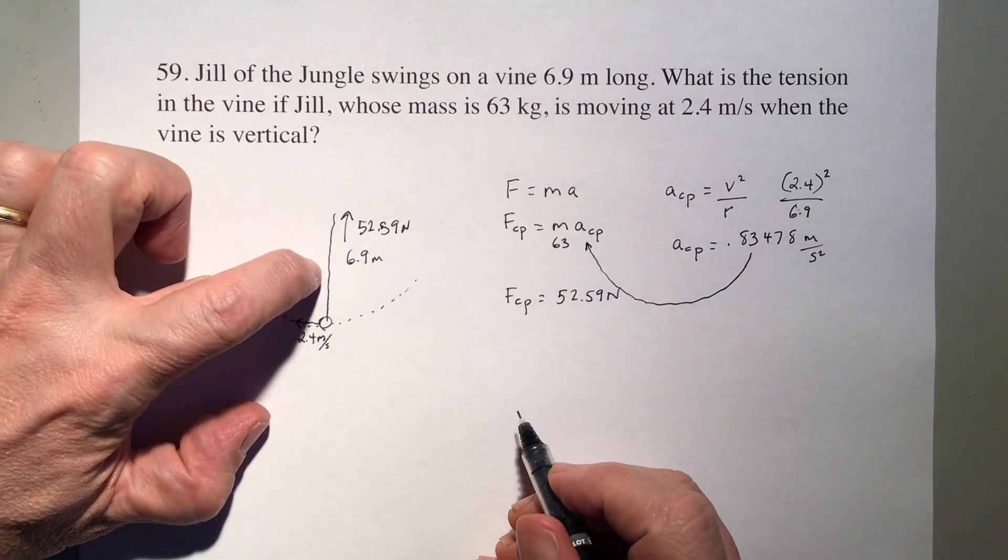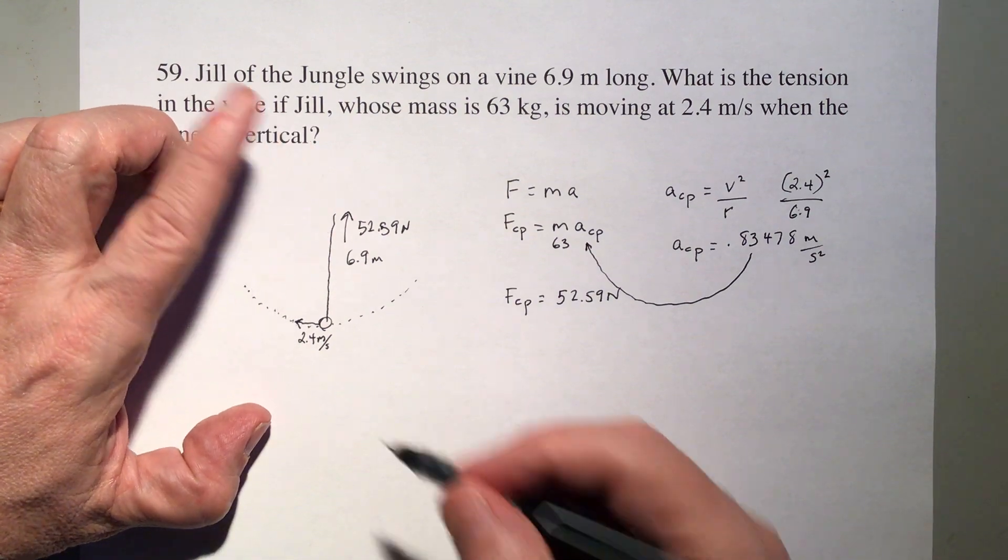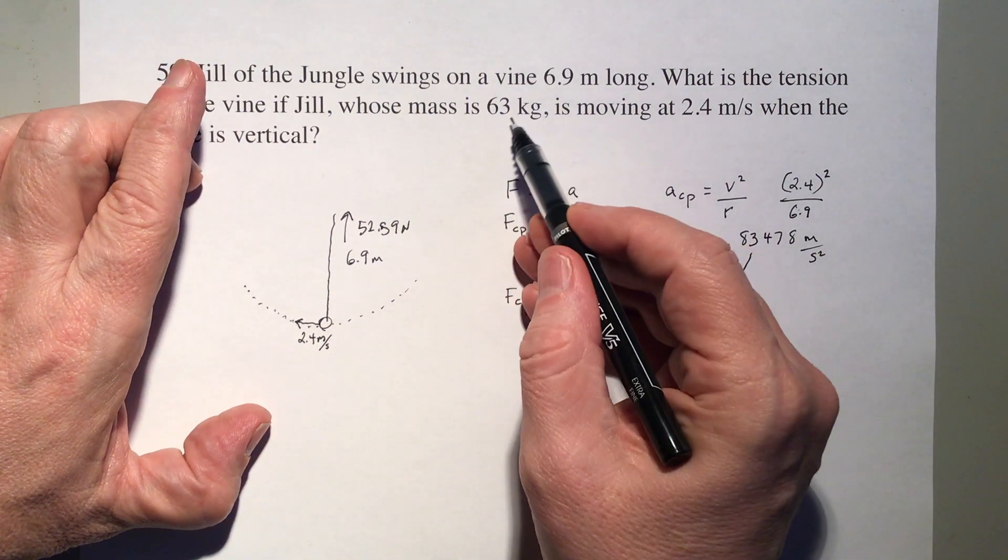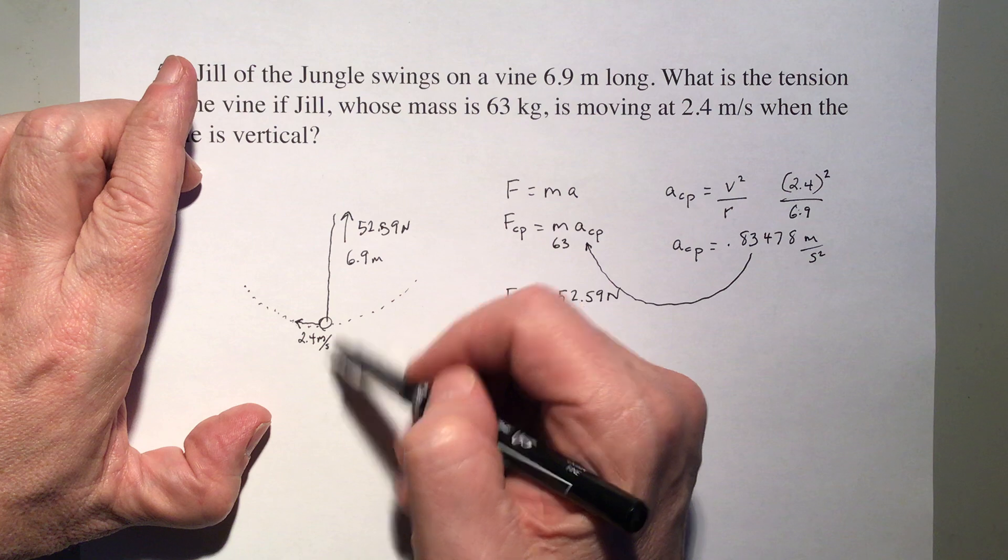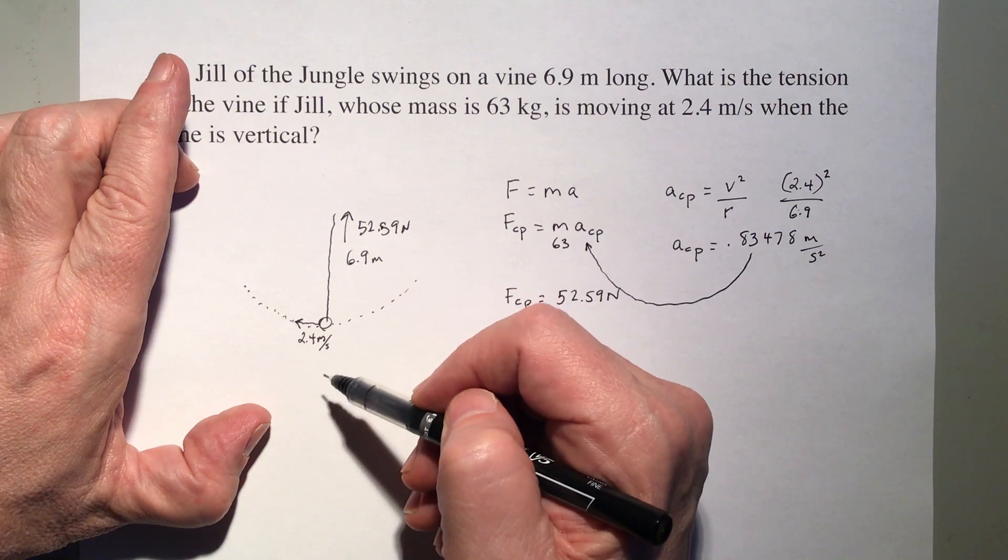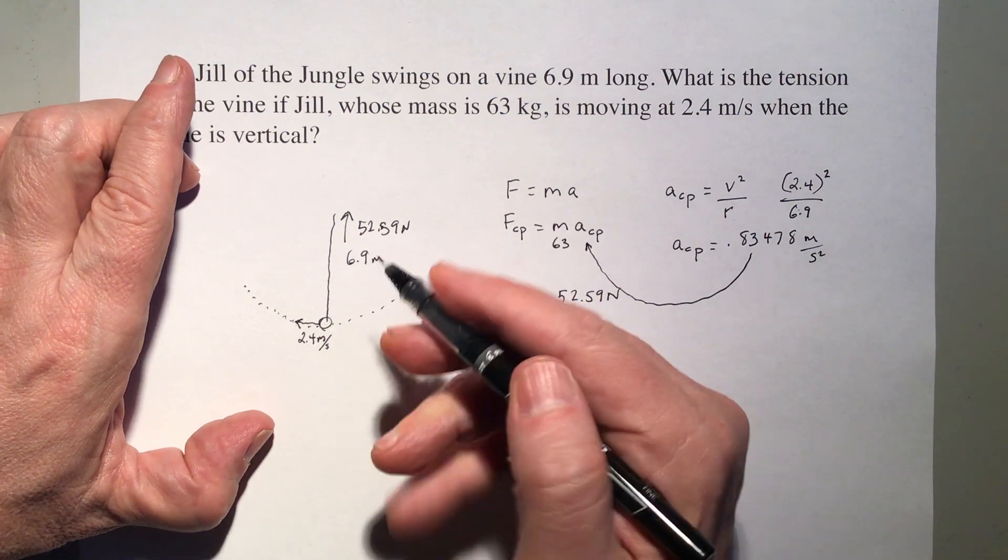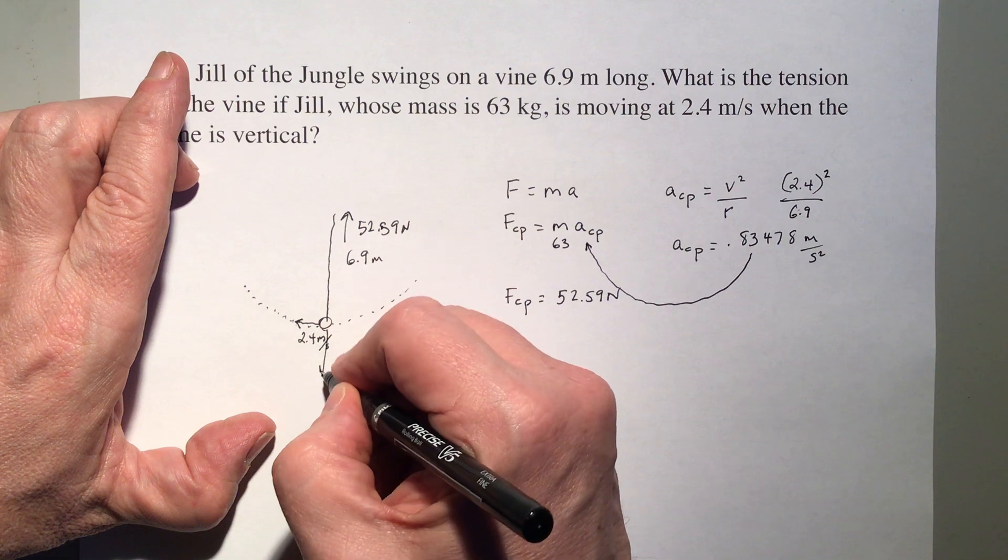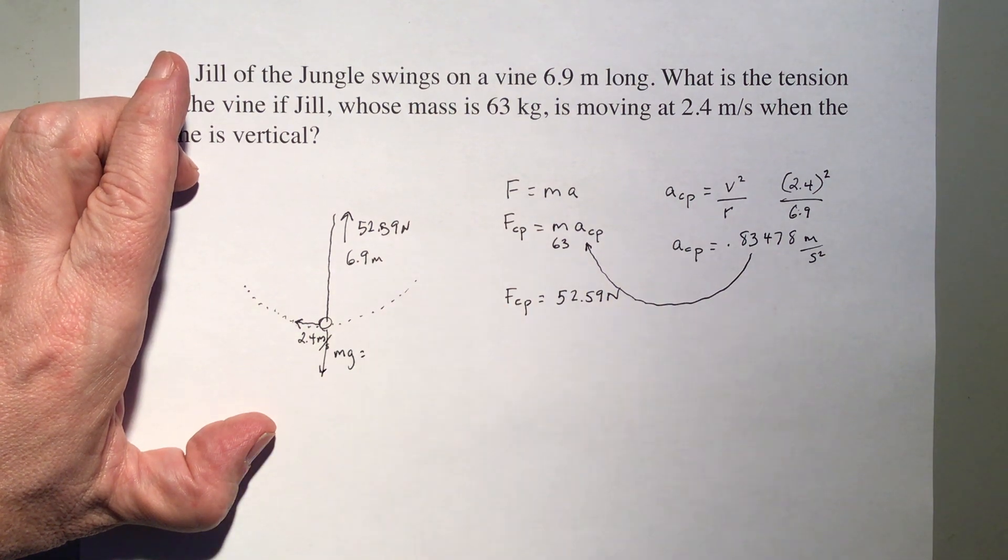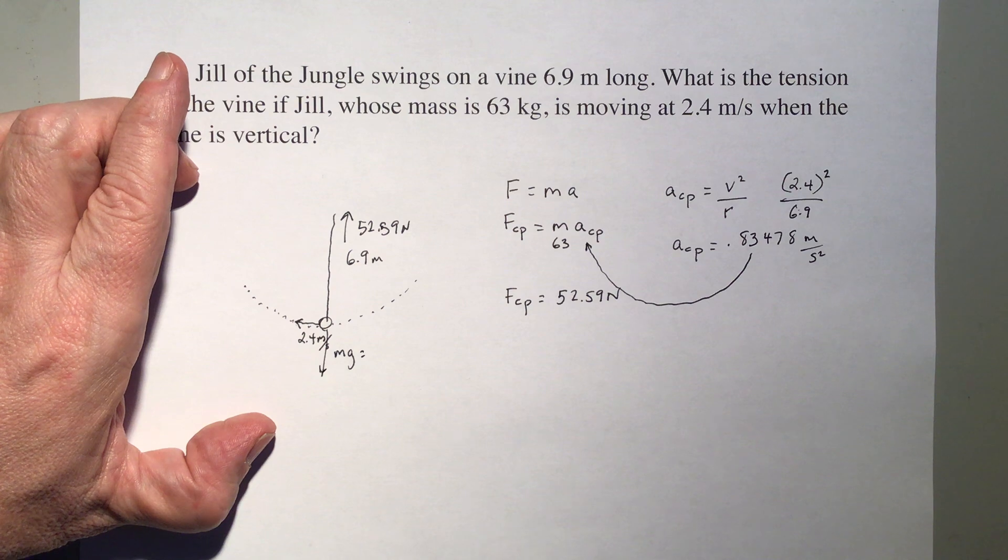Okay, so that's pulling on this vine upward. Now she weighs 63 kilograms, and so her weight is going to be pulling also on the line, increasing the tension as she pulls downwards. mg equals 63 times 9.81, 618.03 down.